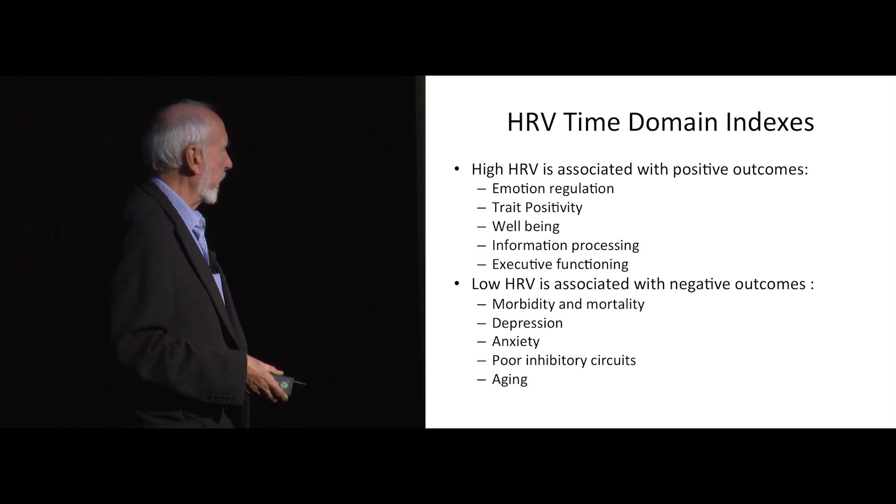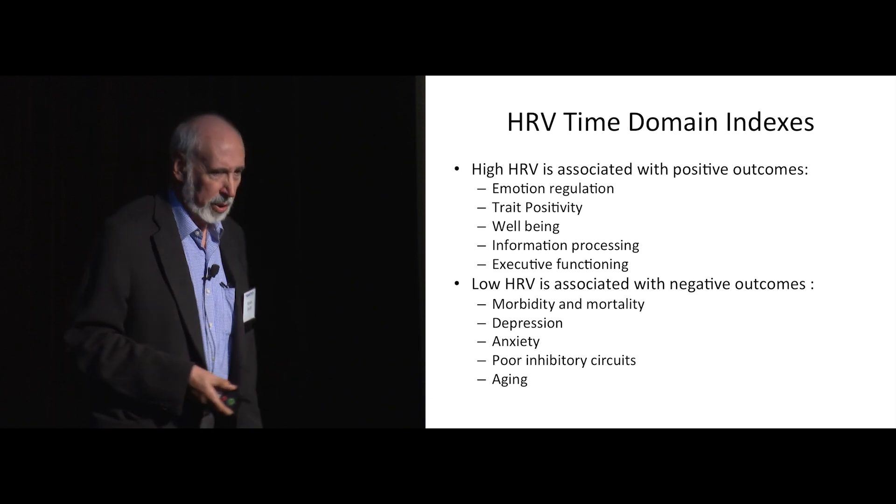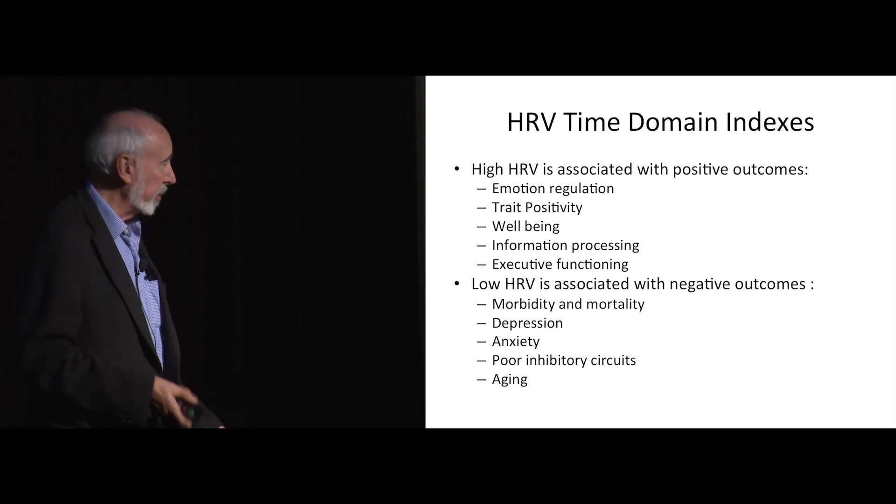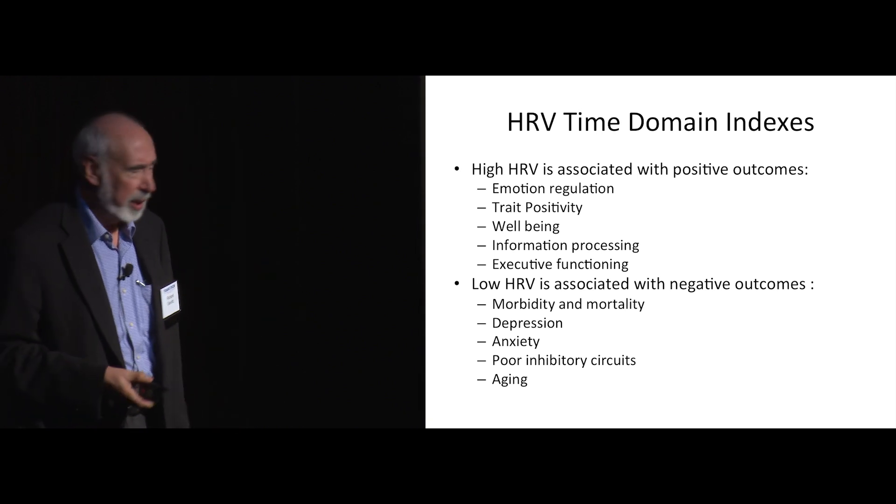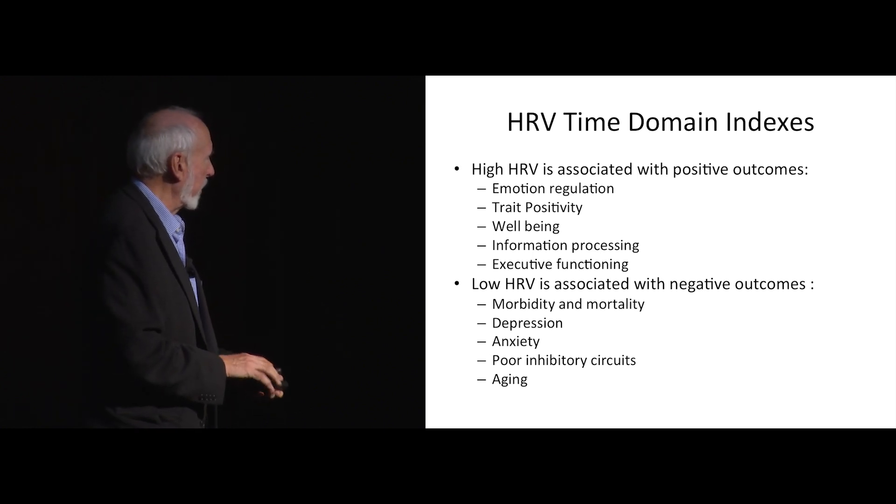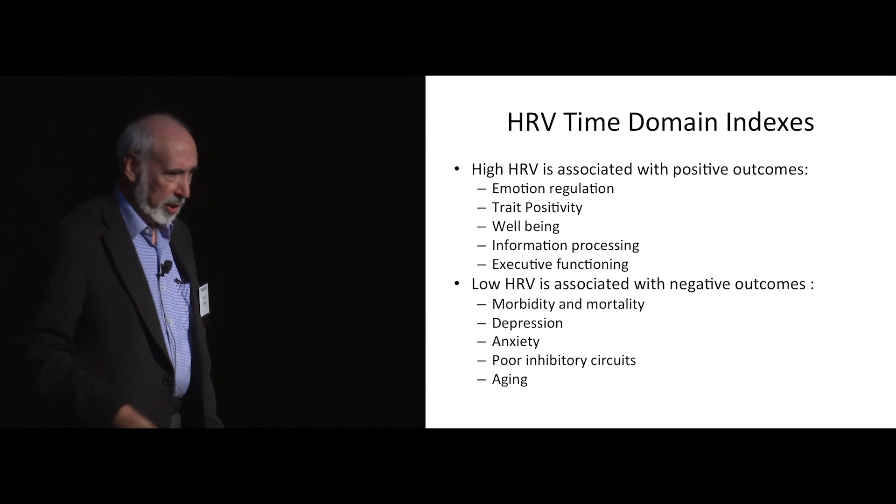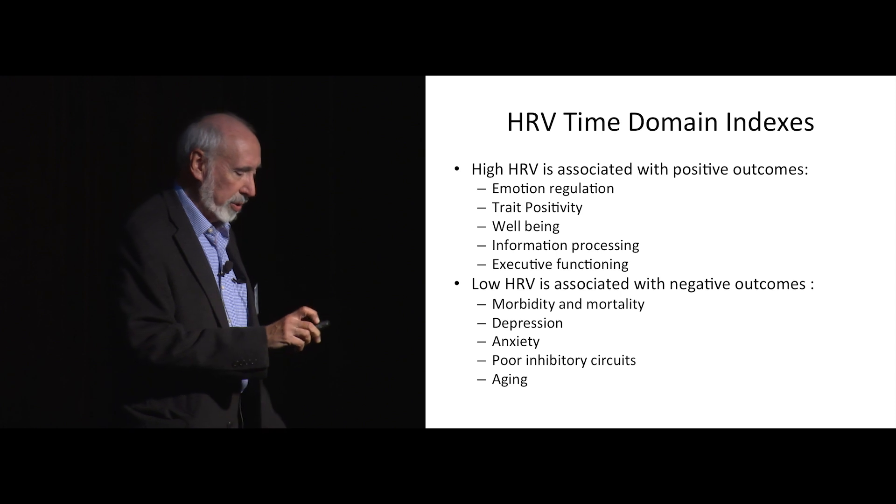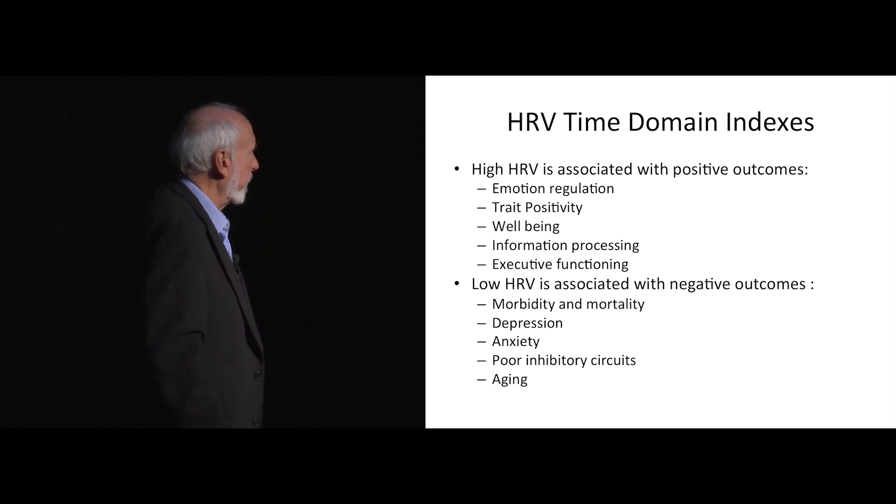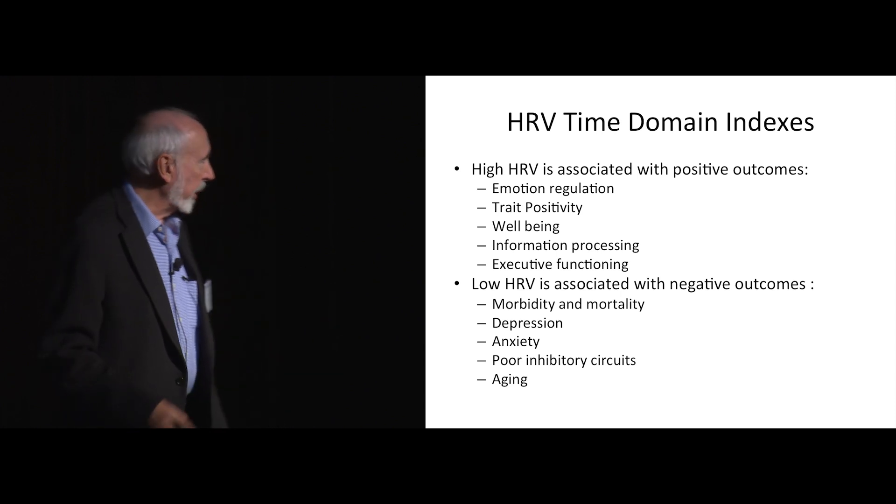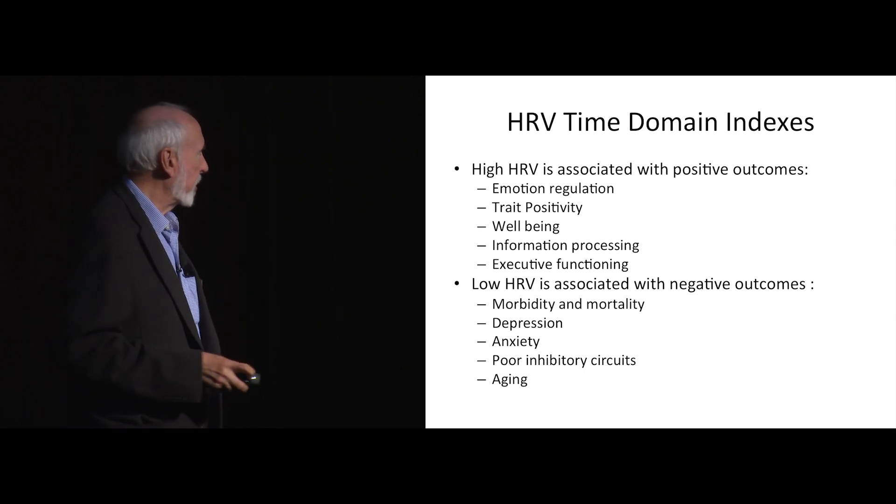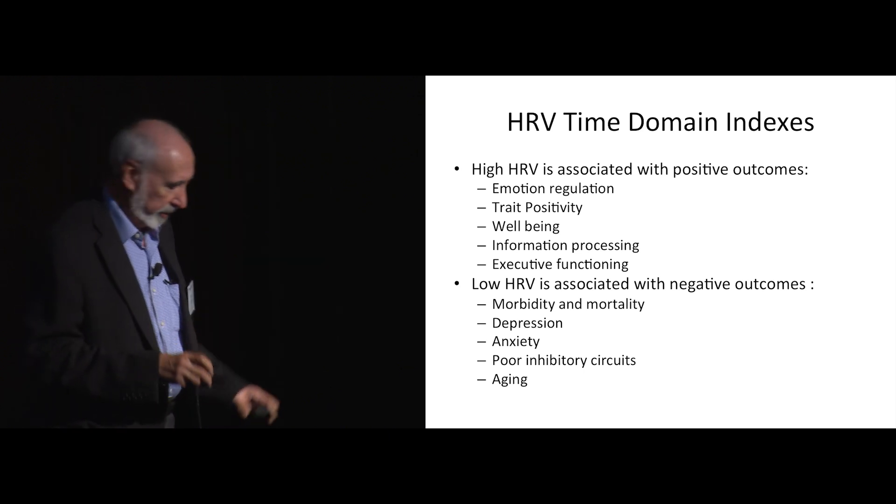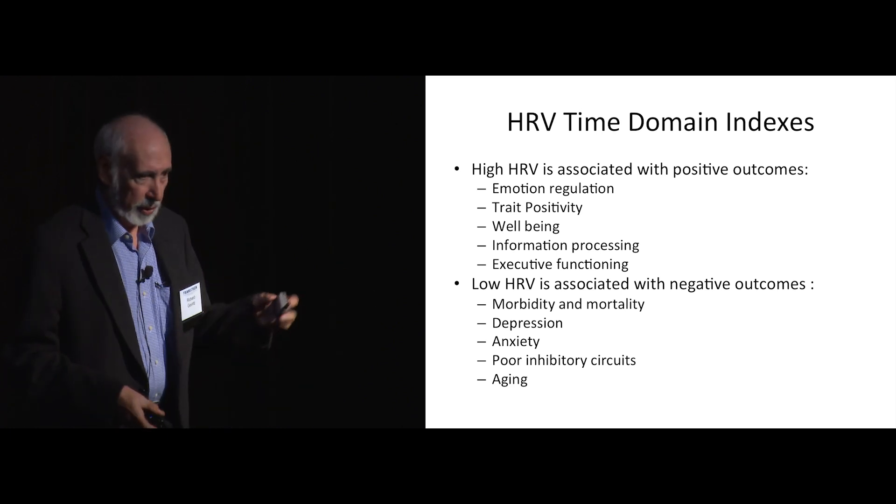Low heart rate variability is associated with negative outcomes like morbidity and mortality. Heart rate variability is a powerful independent risk factor for mortality, all-cause mortality, and especially for cardiac mortality. Independent means independent of all other lifestyle factors and genetics. So it's a marker for depression, for anxiety, poor inhibitory circuits, and for aging, unfortunately. I've been watching mine go down for 25 years.